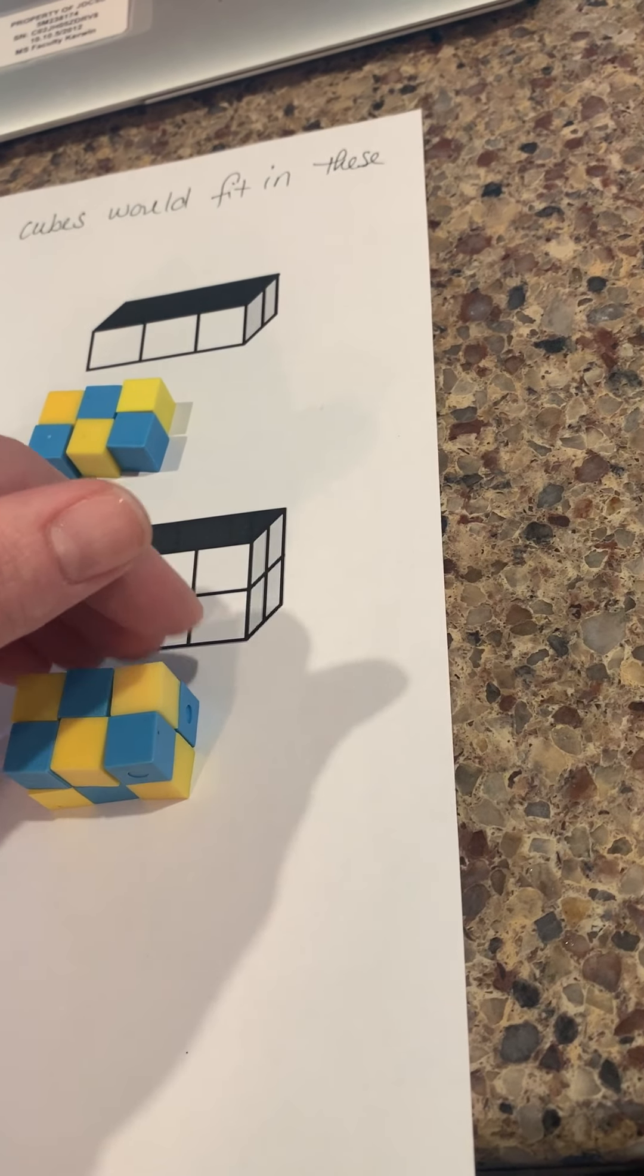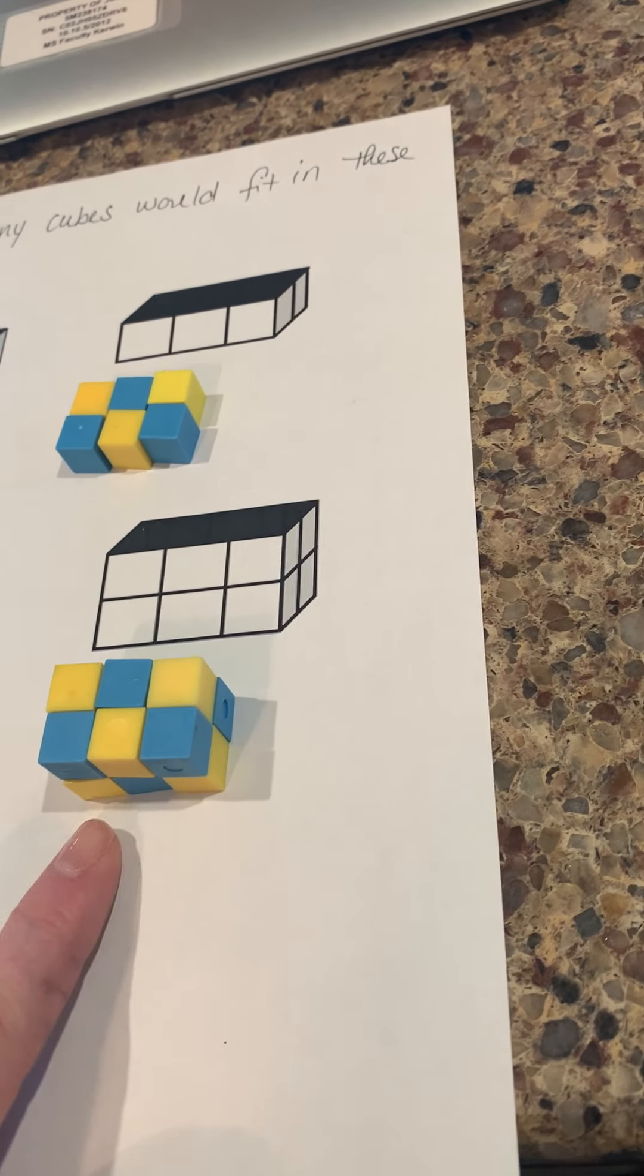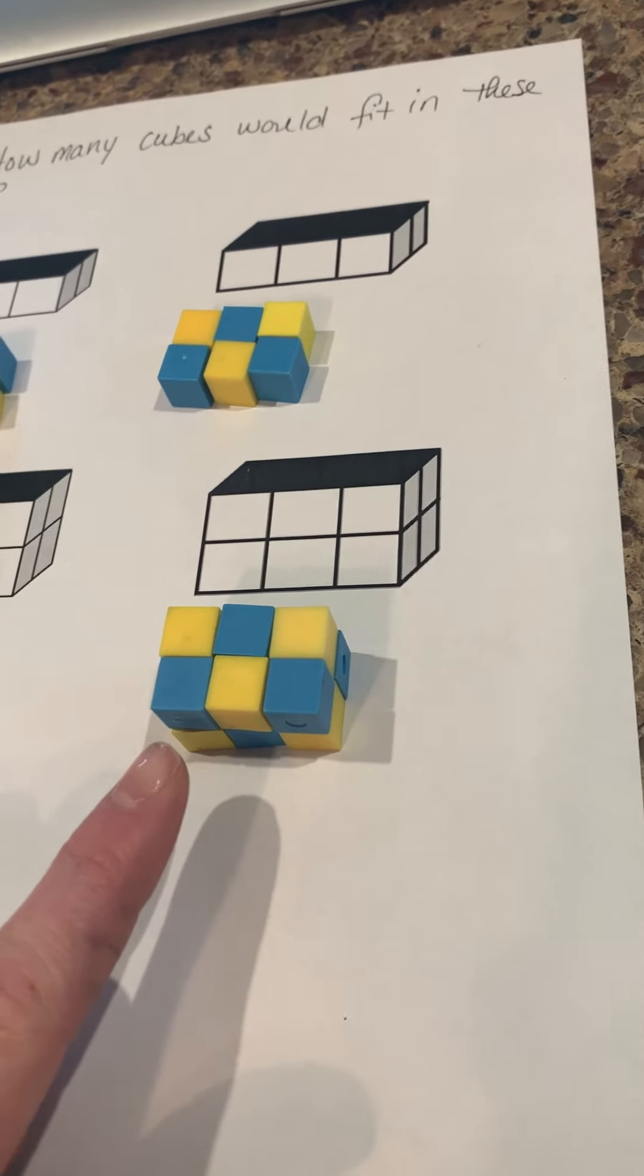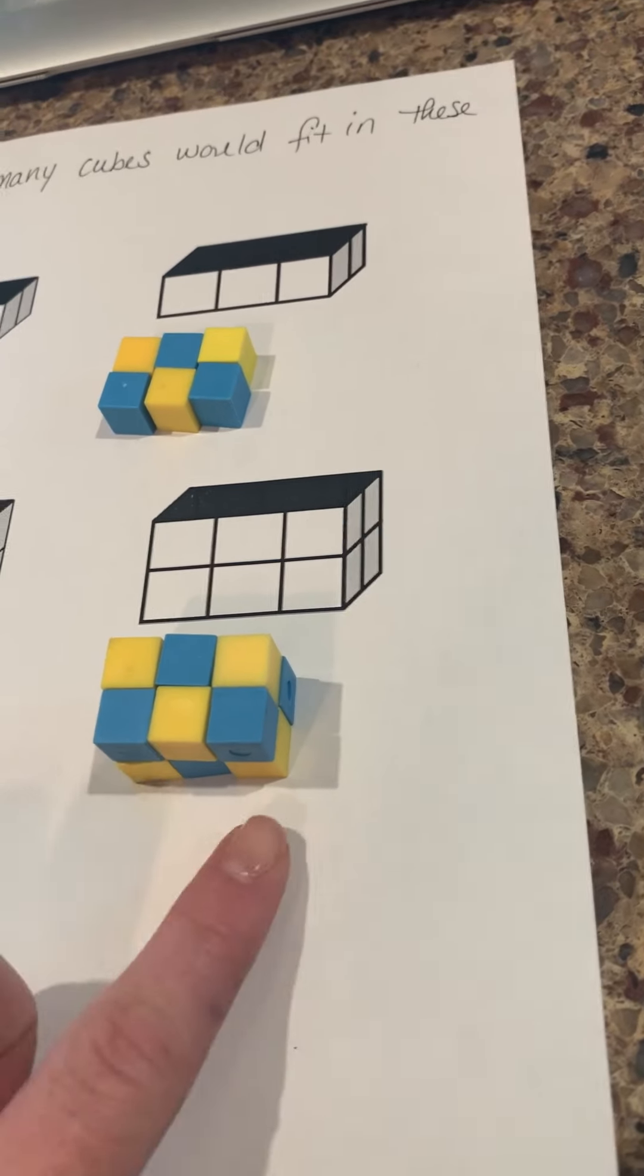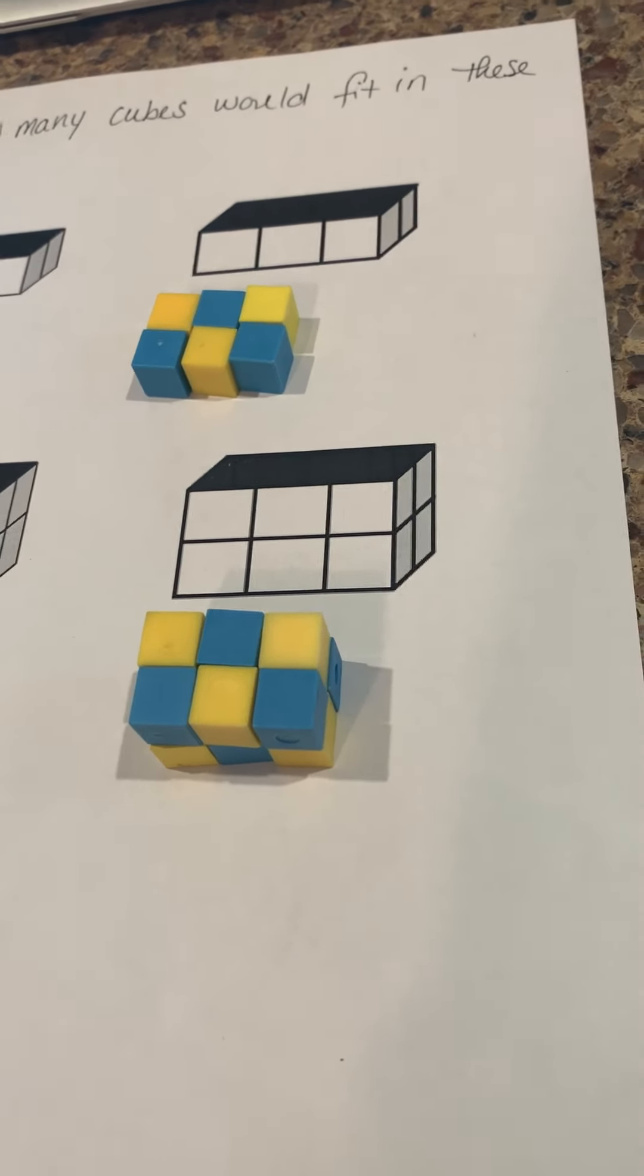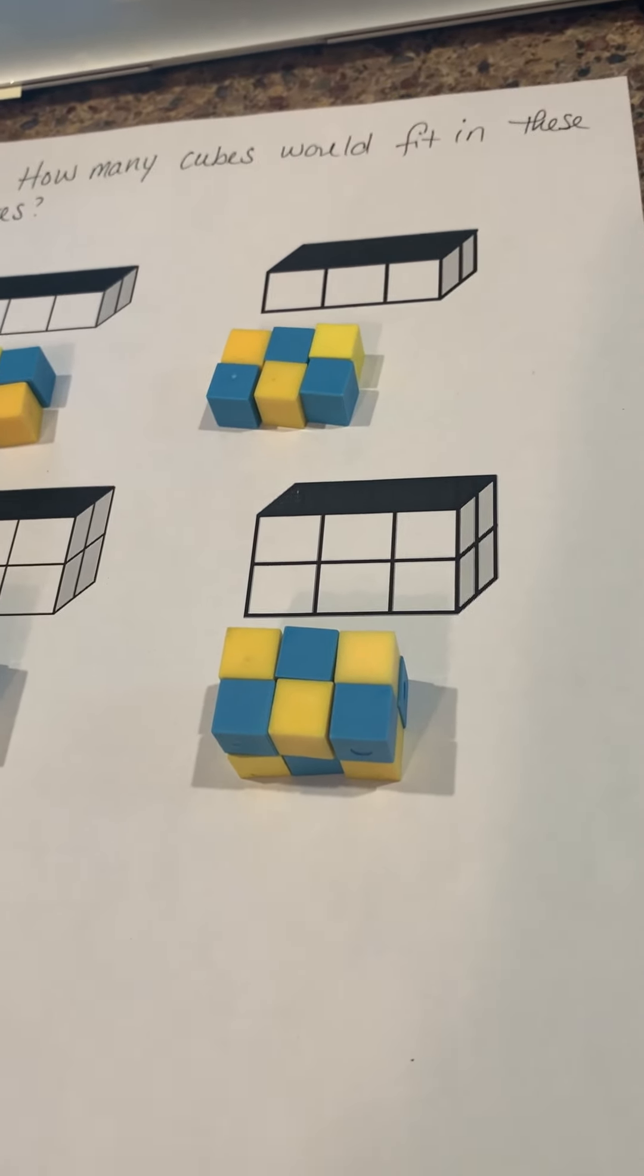Again, some of you might be able to do this mathematically. You can just go, well, Miss Kerwin, if the bottom layer has six and the top layer has six, then I already know my answer. But here it is right here. We can see that we've got our six here and our six on bottom. So that means this box would fit 12 cubes.